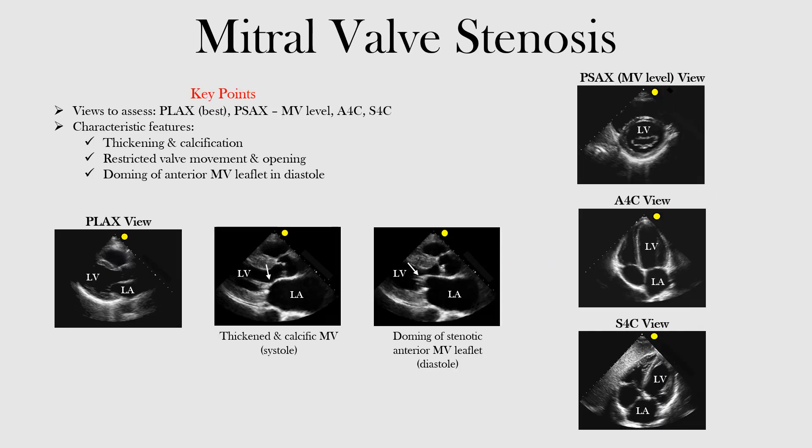In this lecture we want to look at mitral valve stenosis. There are a few views we want to access and we also want to look at the characteristic features in those views. The views you want to look at are the parasternal long axis view — that tends to be the best one to assess for any mitral stenosis. What you're specifically looking at there is thickening and calcification of the valve.